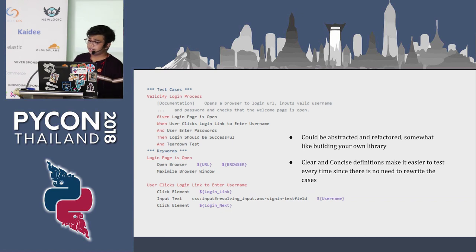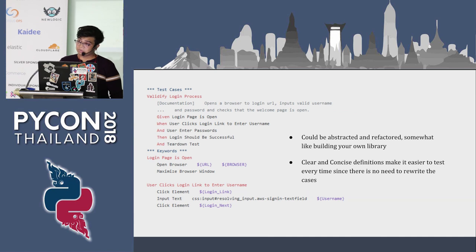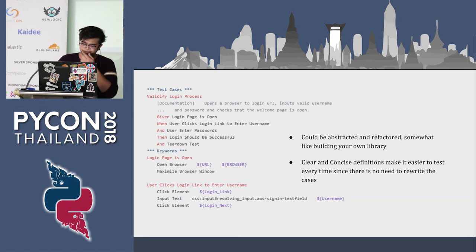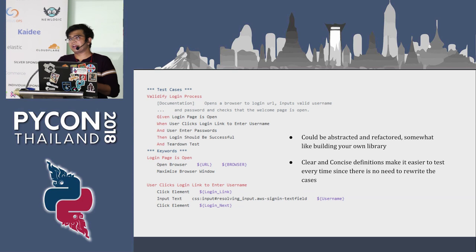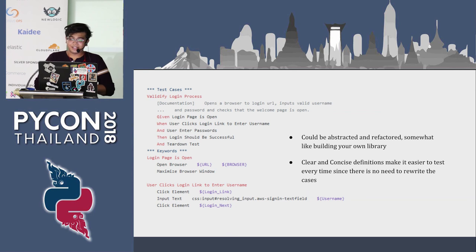If you refactor and abstract it somehow — it's like building your own library. It's very good. After all the hard and painful processes, you'll have a very concise test case. You won't have to build a ground-up test case every Friday. Clear and concise definitions make it easier to test every time since there's no need to re-read the cases.